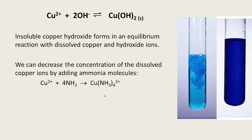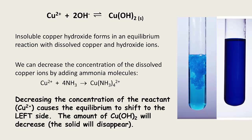Now let's look at how that applies to equilibrium principles. Decreasing the concentration of the reactant — in this case the copper ions — causes the equilibrium to shift to the left in order to reverse this change and make more copper ions, replacing the ones that were removed. This will end up decreasing the amount of solid copper hydroxide in the mixture as the equilibrium shifts towards the left side. So the copper hydroxide disappears and leaves the clear bright blue solution of the complex ion. In other words, formation of complex ions increases the solubility of the copper hydroxide — something we will learn more about at Level 3.